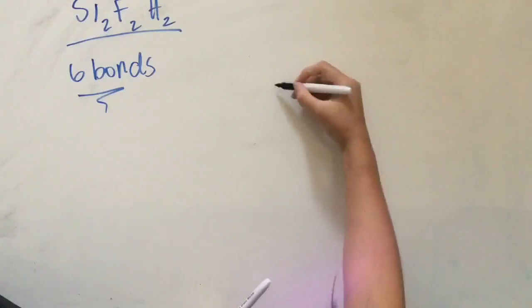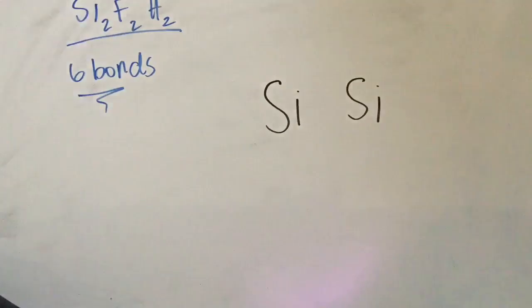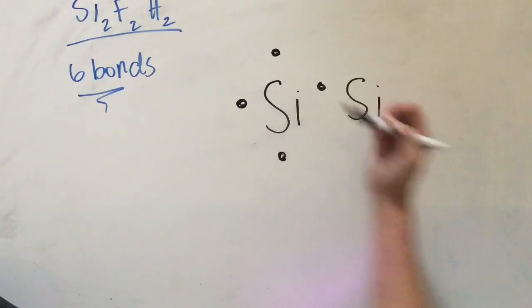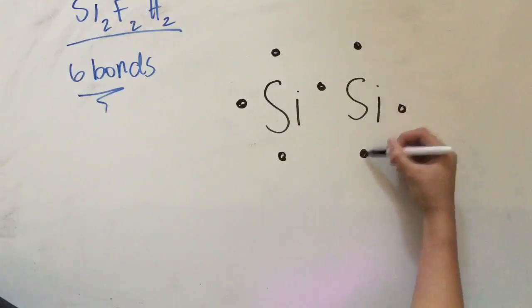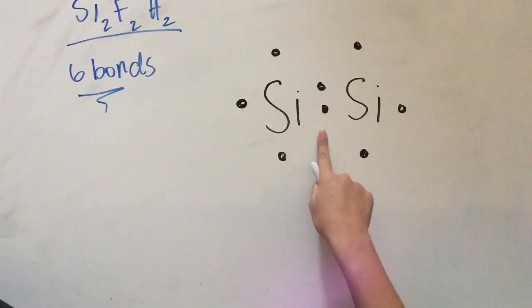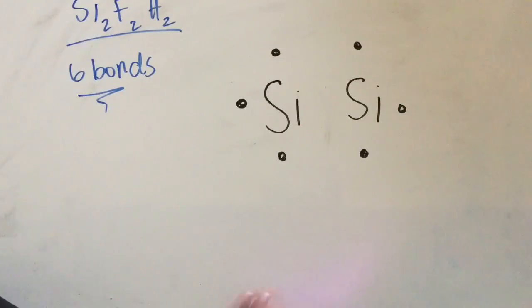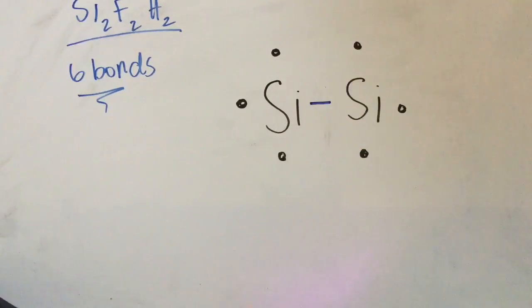From here, we are now able to start our Lewis dot structure. I'm going to start with my central atoms, which are the 2 silicons. Then I'm going to draw the valence electrons around them. In doing this, I form a valence electron pair. This pair of valence electrons can now be formed into a bond between the 2 silicon atoms.